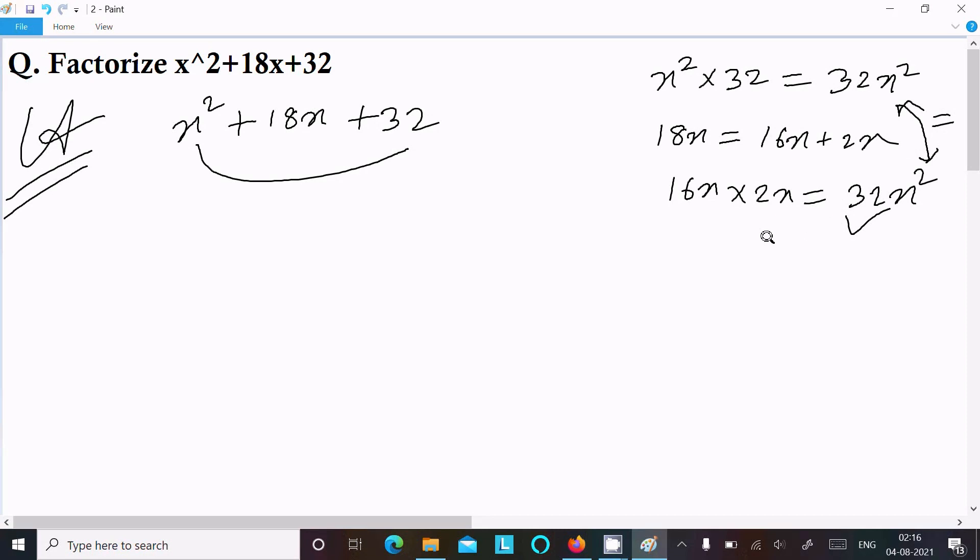We can write x squared plus 16x plus 2x plus 32. Now take x as common, so x bracket x plus 16. And here 2 is common, so 2 bracket x plus 16.